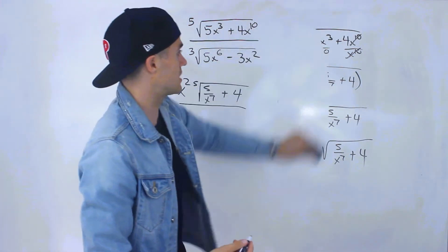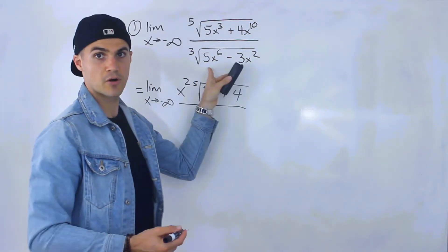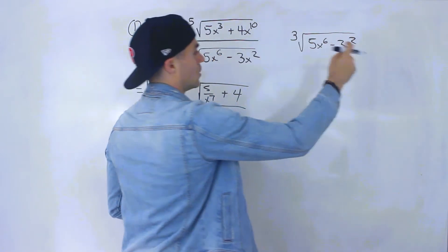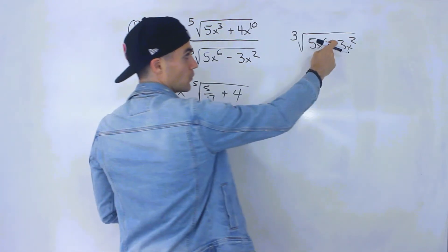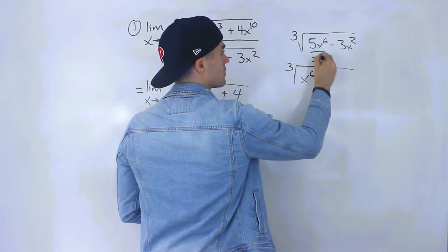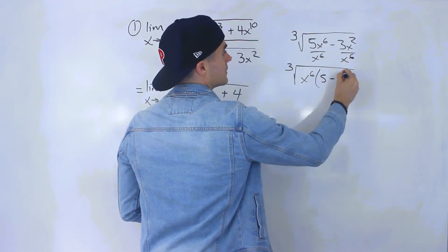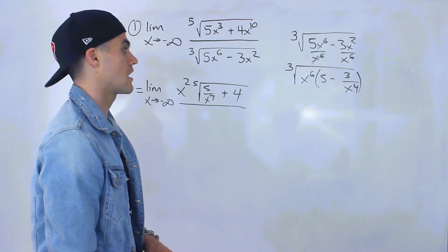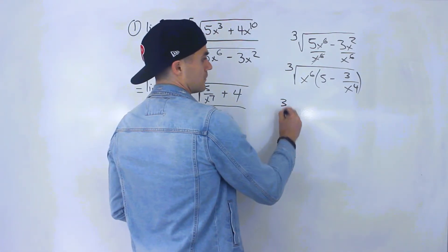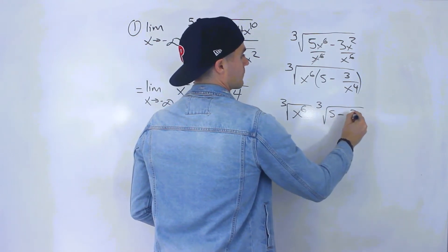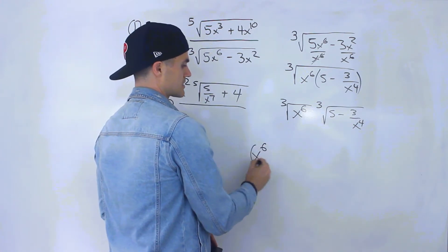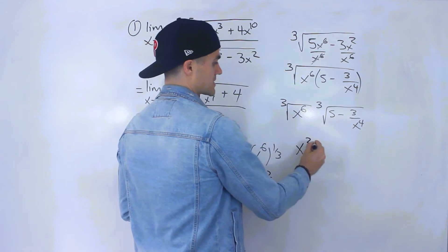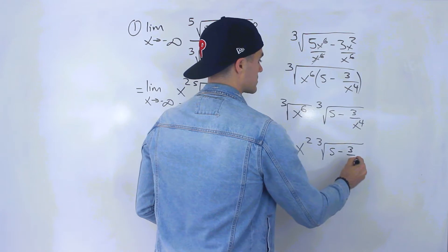Now we apply the same process to the denominator: the third root of 5x⁶ minus 3x². We factor out x^6 — the highest exponent. Dividing each term: 5x⁶/x⁶ = 5, and 3x²/x⁶ = 3/x⁴. So we get the third root of x⁶ times the third root of (5 − 3/x⁴). Since x⁶ to the power of 1/3 equals x², this becomes x² times the third root of (5 − 3/x⁴).